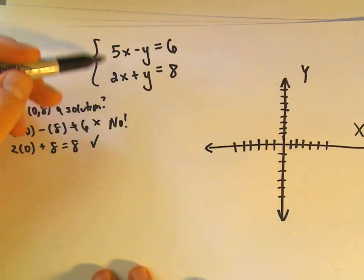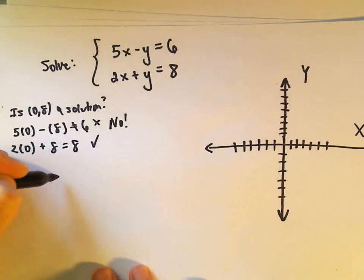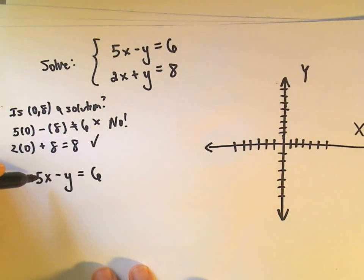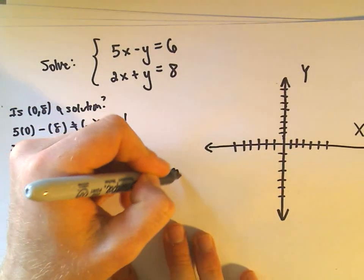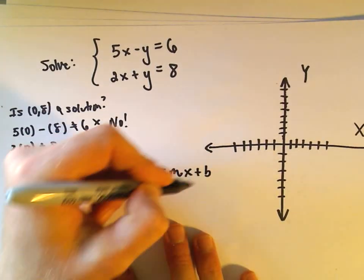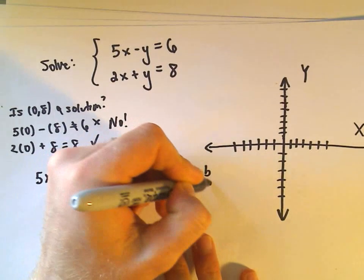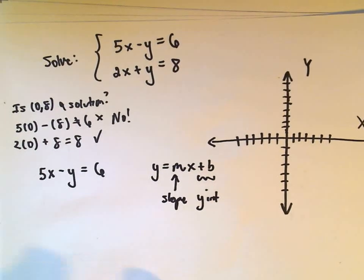Okay, so again, if you've seen other techniques, there's certainly other ways to do these, but I just want to talk about graphing in this video. So we've got the equation 5x minus y equals 6, I'm going to write it in slope intercept form, which if you'll recall is y equals mx plus b, m represents the slope, and the b is our y intercept.